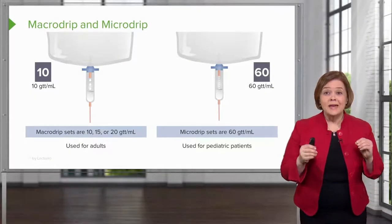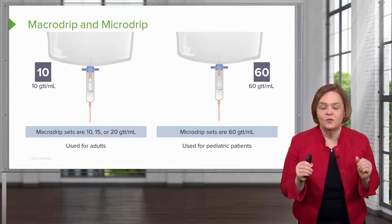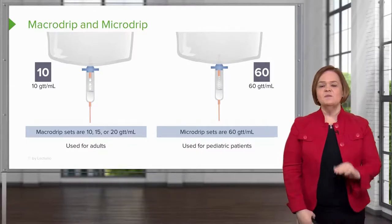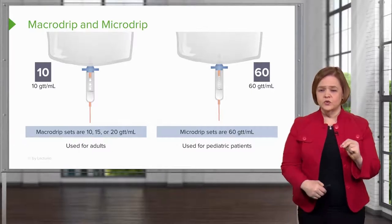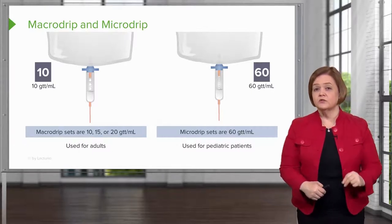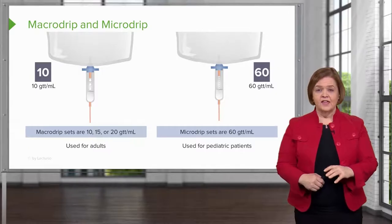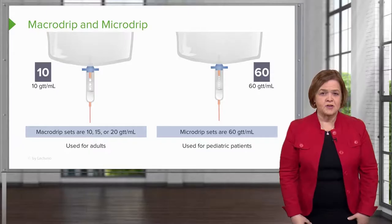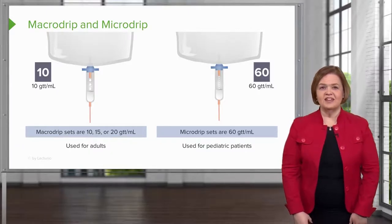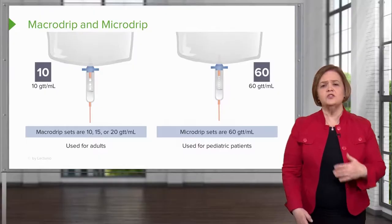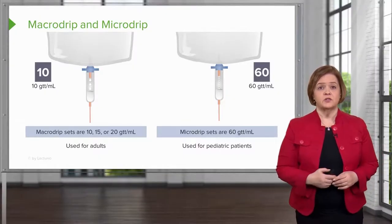Now we have micro drip tubing — it's 60 drops per mil. I would hate to count this, but it's 60 drops per mil. You'll see this if it's a really crucial medication or with our pediatric patients, because they are so sensitive to volume. The practice questions we give you are not going to be 60 drops per mil. We're going to stick with the macro drip, but we wanted you to know that type of tubing is out there and used with very special populations.